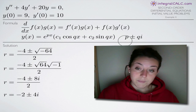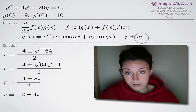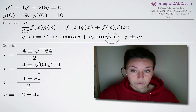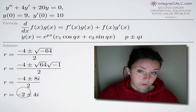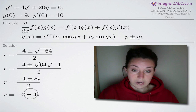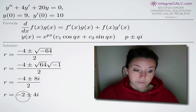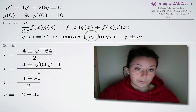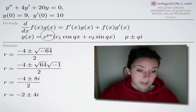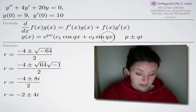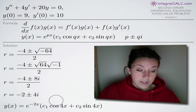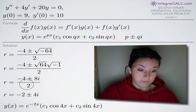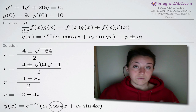Notice that this solution is in the exact same form as p plus or minus qi, which was the second part of this two-part formula for second order differential equations. The information we need to pull out is that negative 2 is p and 4 is q. So we will plug in negative 2 for p and 4 for q both here and here. Now that we've solved for r and identified p and q and plugged those into our formula, we've found our y equation, which is super important.